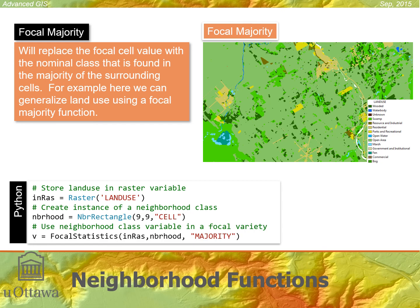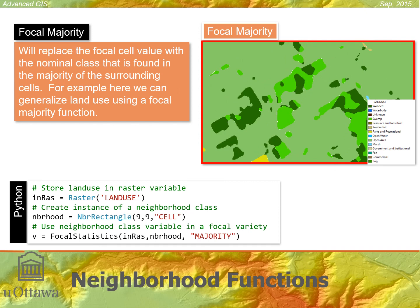One issue with focal majority is that after running it, there can be no-data regions — the little white areas you see. These are cells that had no clear majority within the neighborhood. That's one problem with a focal majority filter: if there is no majority, it outputs no data. These artifacts aren't visible when zoomed out but appear when zoomed in, and they can affect subsequent analysis.